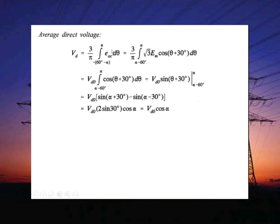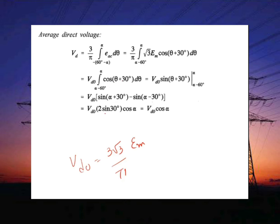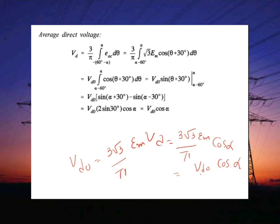As derived in the previous lecture, EAC equals root-3 Em cos(theta + 30°). Substituting the value of EAC, root-3 Em is a constant, so 3 root-3 Em upon pi is known as Vd0. Evaluating the integration of cosine gives a sine, and substituting the limits yields VD equal to Vd0 cos alpha — that is, VD = (3√3 Em / π) cos α. This is the DC voltage expression with delay angle alpha, compared to the no-load DC voltage derived previously without any delay.